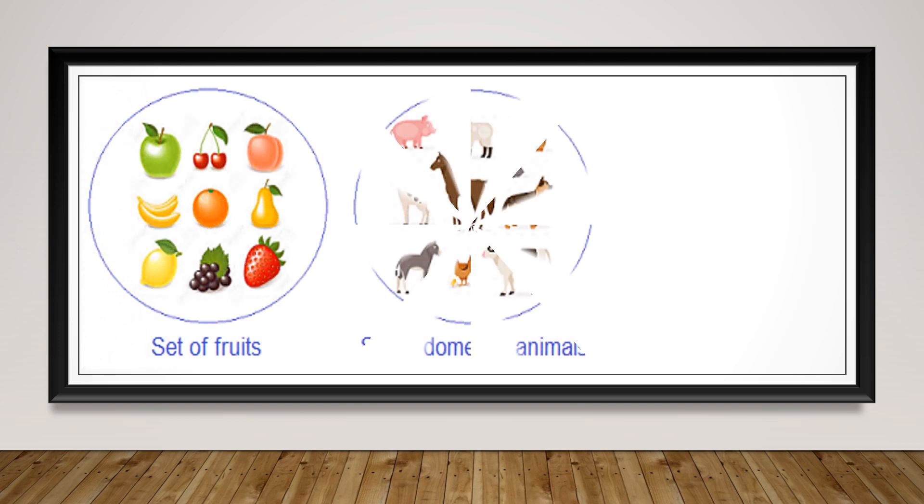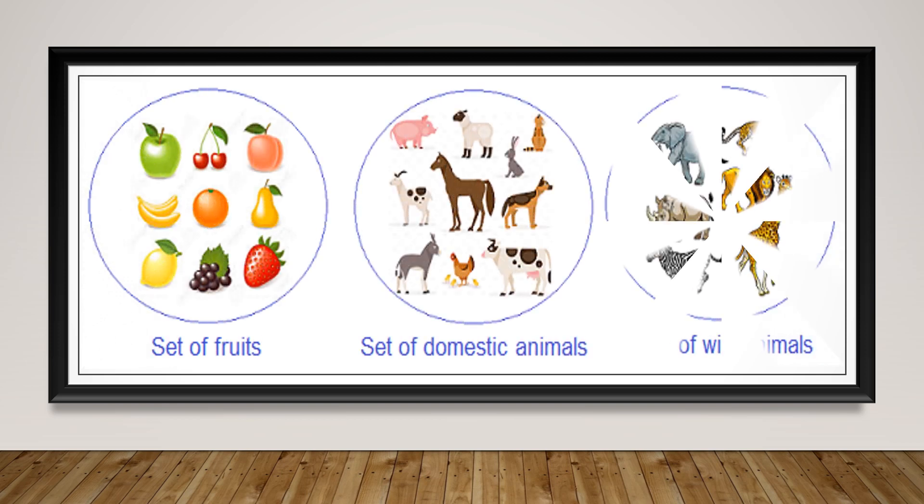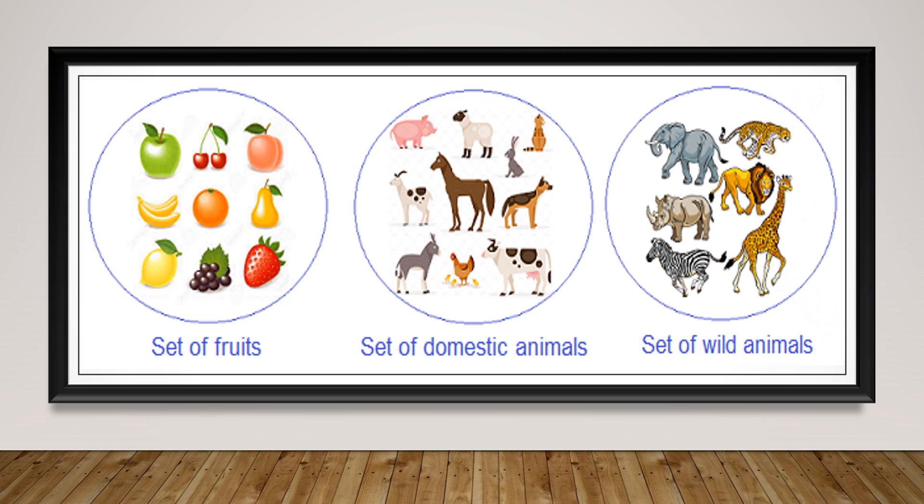A set of fruits, a set of animals — domestic animals or wild animals. And as we say, sets can be anything: a set of students, a set of boys, a set of girls, a set of furniture, a set of houses, and so on.